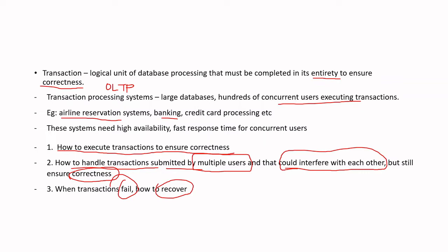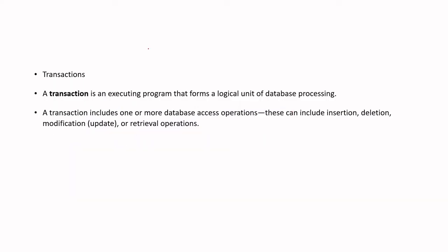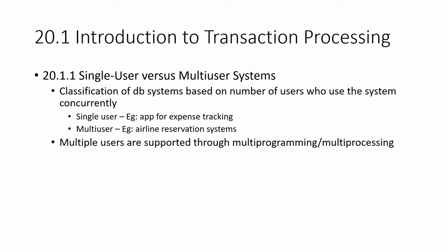Mainly, when we talk about transaction processing, we are talking about two things: correct execution of transactions when millions of users are concurrently executing on a system at the same time, and if a failure occurs, how to recover from those failures. A transaction is an executing program that forms a logical unit of data processing, consisting of one or more data access operations such as insertion, deletion, update, or retrieval operations.